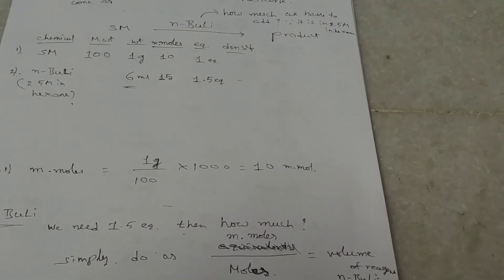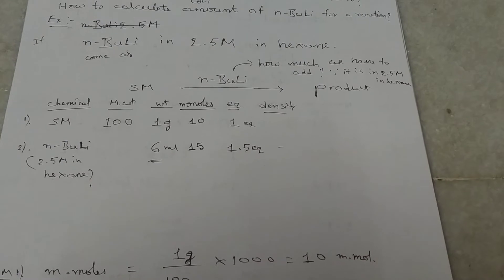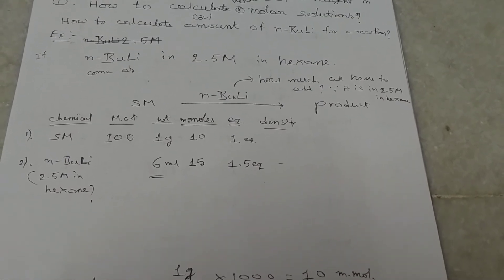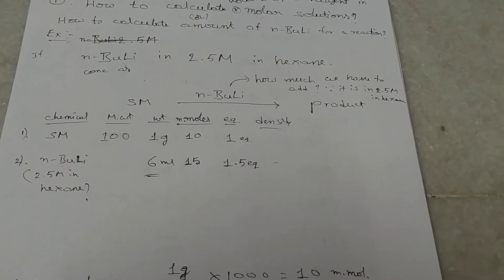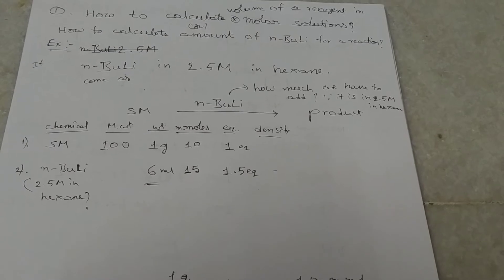Then, now n-BuLi, suppose it came in hexane as 2.5 molar. Then what is the volume of the n-BuLi we have to add?